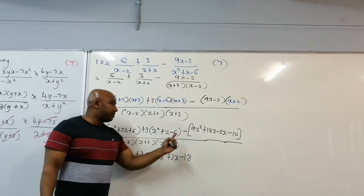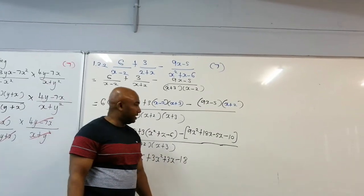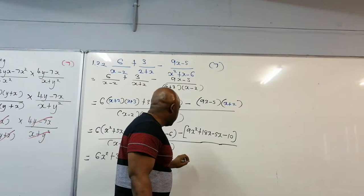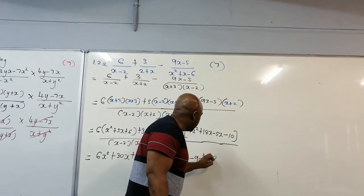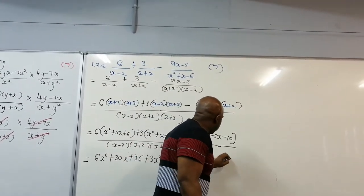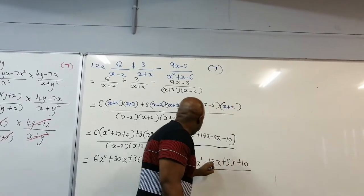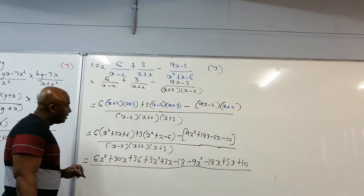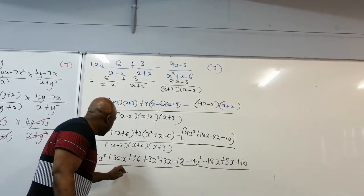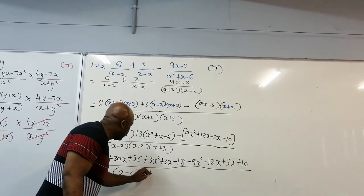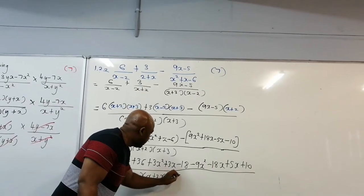Now we're multiplying by negative, so all the signs will change. That gives minus 9x squared minus 18x plus 5x plus 10. All divided by x minus 2, x plus 2, x plus 3.